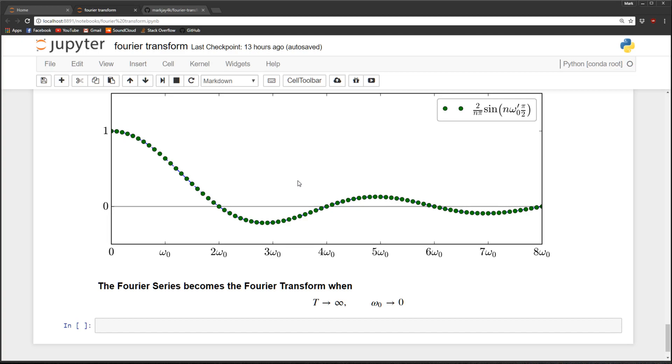So that's what the Fourier transform is. It's going from discrete values that are equally spaced to a continuous frequency spectrum.